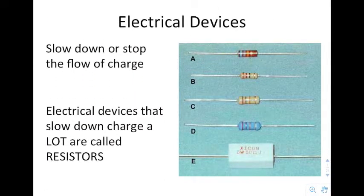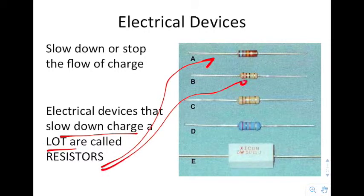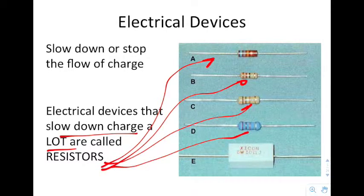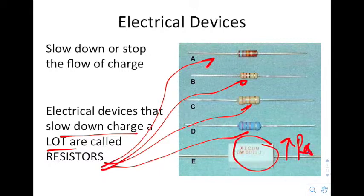Now, resistors are electrical devices that can slow down or stop the flow of charge. Whenever it's something that slows down the charge a lot, specifically we call it a resistor. Now resistors have color codes that depending on what classes you take in the future, you may need to actually memorize those particular color codes. But they basically escalate in terms of resistance. This thing right here has the largest resistance, which means that it will slow down electrons the most.